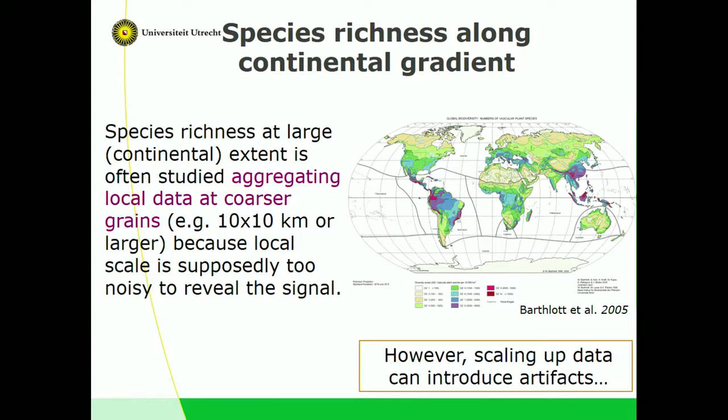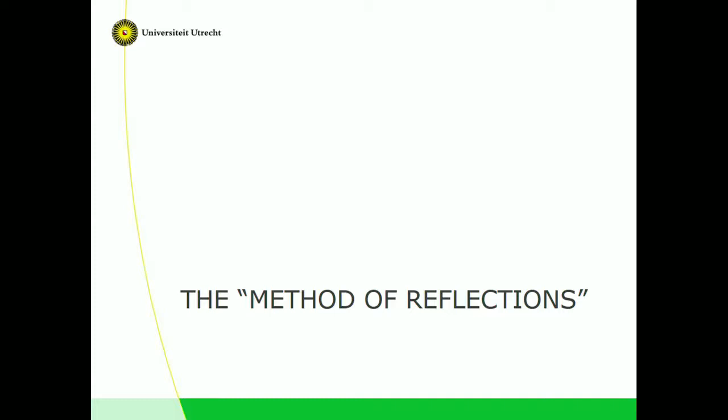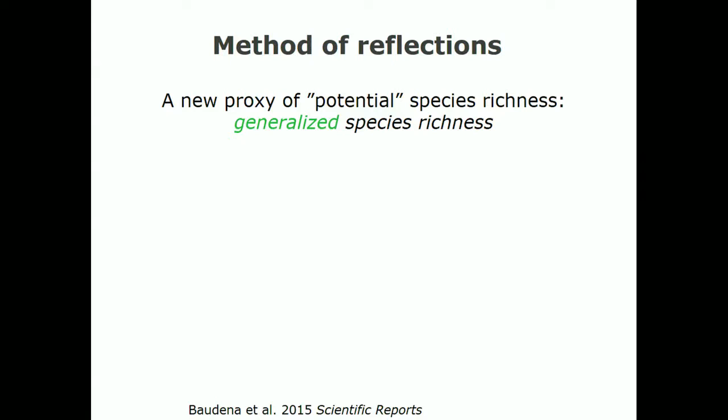Introducing the method of reflections — a network method that introduces a new proxy, an index of potential species richness, or species pool. We call it generalized species richness.